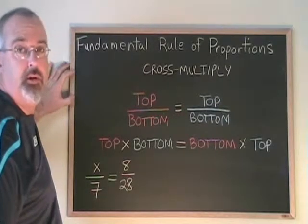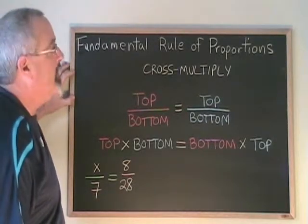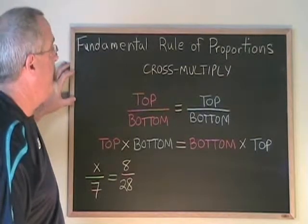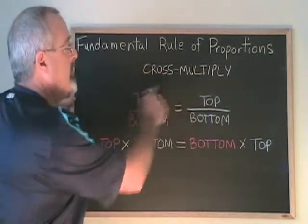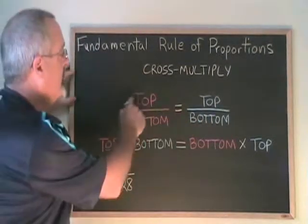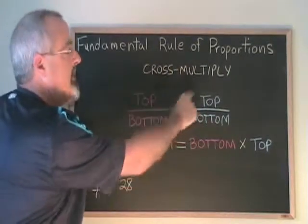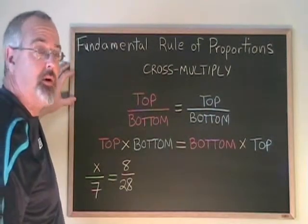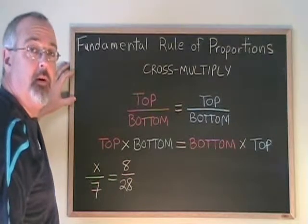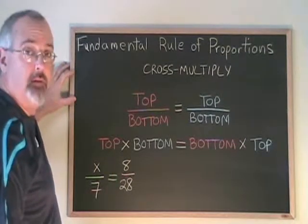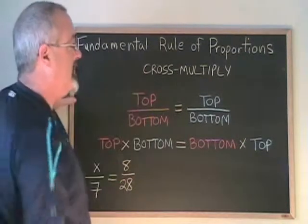The fundamental rule of proportions means that we have to cross multiply to solve them. This is a model of what a proportion looks like. It looks like a fraction, an equal sign, and another fraction. Proportions can be used to solve a lot of math problems, and they're very easy to solve, so long as we know how to cross multiply.